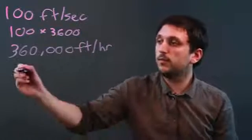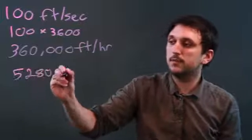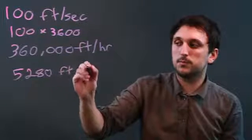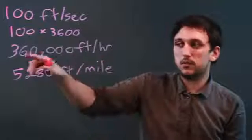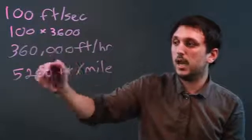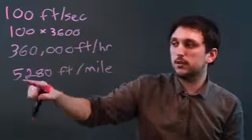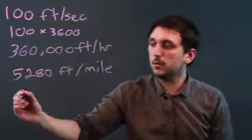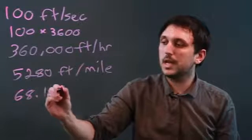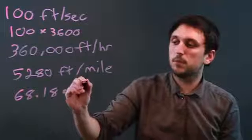There are 5,280 feet in a mile. So we take this number and we divide by 5,280. So 360,000 divided by 5,280 is going to be 68.18 miles per hour.